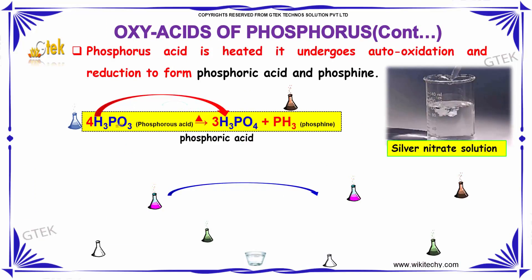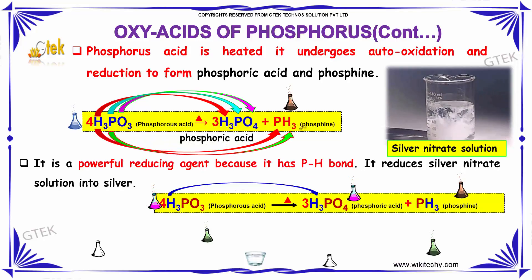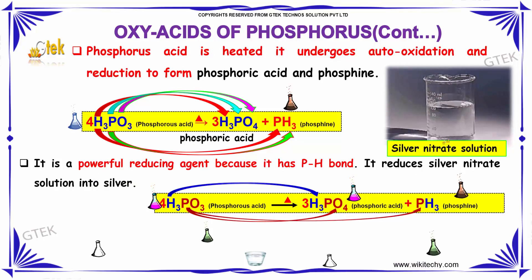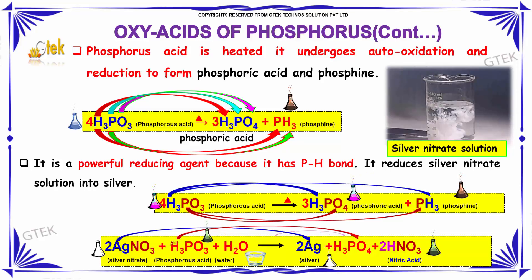When Phosphorous Acid is heated, it undergoes auto-oxidation and reduction to form Phosphoric Acid and Phosphine. It is also a powerful reducing agent because it has a P-H bond; it reduces silver nitrate solution to silver.